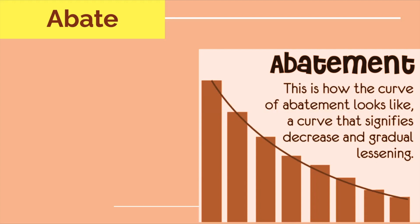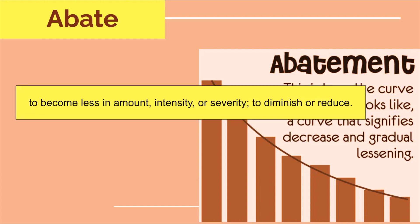Hello friends, welcome back to my channel. In today's episode for GREverse family, we are going to talk about the word abate. As the picture shows, it refers to something which is decreasing in value or diminishing over time — like the height of the barrel crops in the picture when something is decreasing. The meaning is to become less in amount, intensity or severity, or to diminish or reduce.